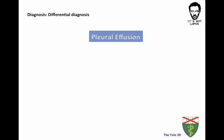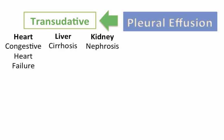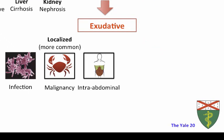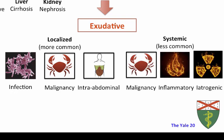Going back to our framework: we categorize pleural effusions as transudative or exudative, then form our differential diagnoses. For transudative processes, think about three organ systems: the heart, liver, and kidney — congestive heart failure, cirrhosis, and end-stage renal disease. For exudative processes, which require more active management, think about localized versus systemic. Localized causes — more common — include infection, malignancy, and intra-abdominal etiologies. Systemic causes include malignancy, inflammatory processes, and iatrogenic causes.